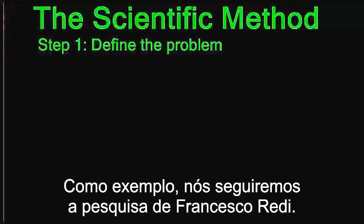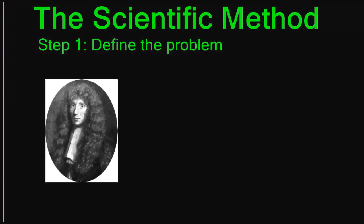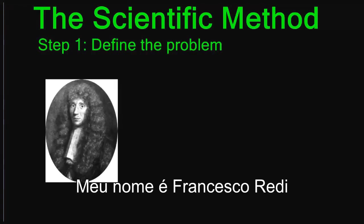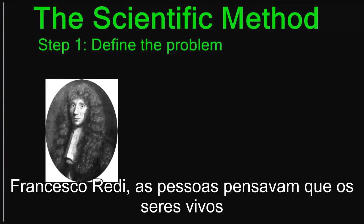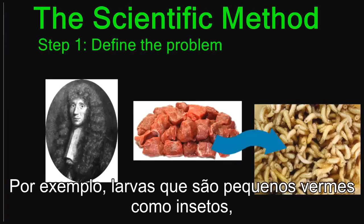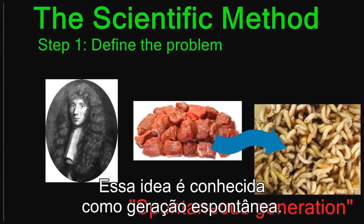As an example, we will use the work of Francesco Redi, an Italian scientist who lived in the 1600s. In the time of Francesco Redi, people thought that living things could come from non-living things. For example, maggots, which are small worm-like bugs, could come from decaying meat. This idea is known as spontaneous generation.